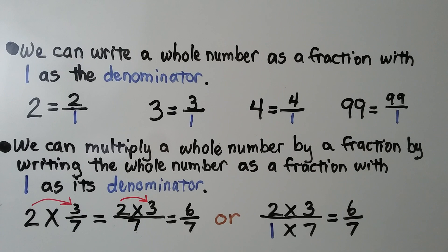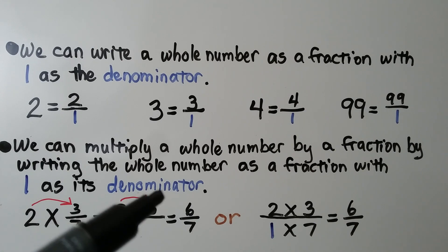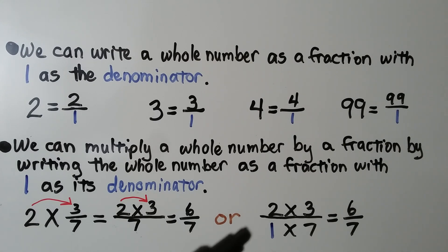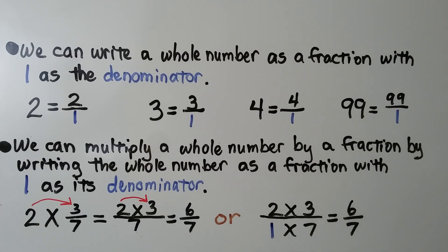We can write a whole number as a fraction with 1 as the denominator. 2 is equal to 2 over 1, 3 is equal to 3 over 1, 4 is equal to 4 over 1, 99 is equal to 99 over 1. And we can multiply a whole number by a fraction by writing the whole number as a fraction with 1 as its denominator. So for 2 times 3 sevenths, we can write 2 times 3 as the numerator over 7 and get 6 sevenths. We can also write this as 2 over 1 times 3 over 7, which gives us 2 times 3 over 1 times 7, also equal to 6 sevenths. We get the same product either way.